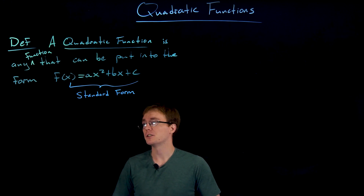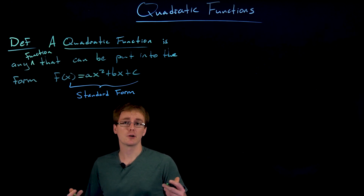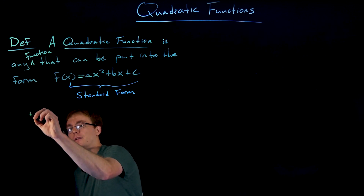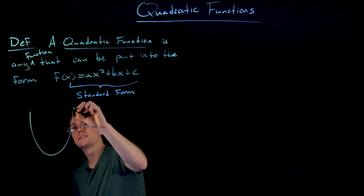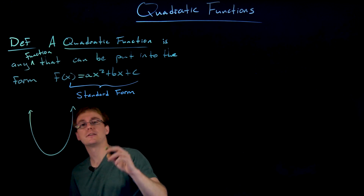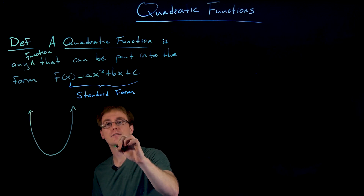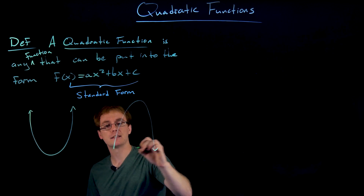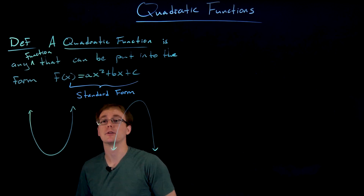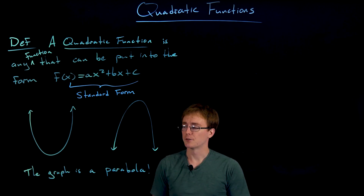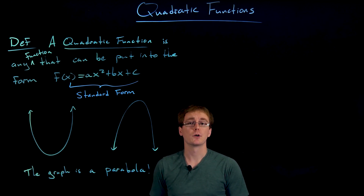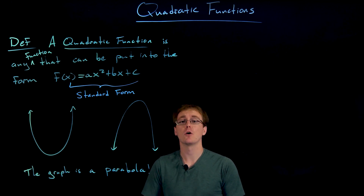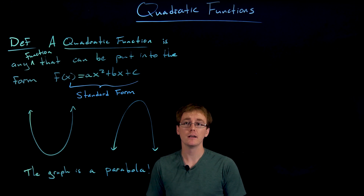A couple other things we want to review about our quadratic functions is that they really only have one shape. A parabola is the name of that shape, and it can be either concave up or concave down. Whenever we graph one of our quadratic functions we're always going to get these shapes that we call a parabola.